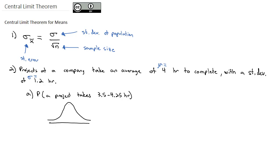We have a normal distribution with a mean in the middle at 4, and we want to know the probability we're between 3.5 and 4.25 — the probability we're inside this range. The normal distribution command on Excel will give me the area to the left, so we're going to have to subtract off the area we don't want in that left tail.